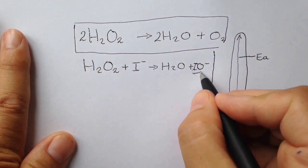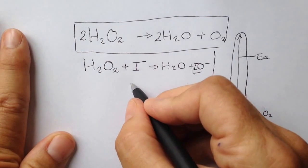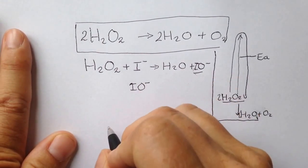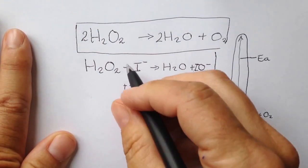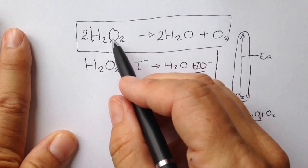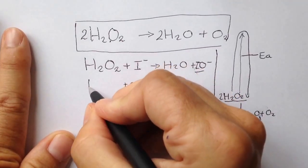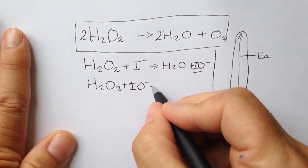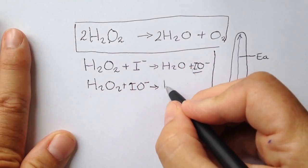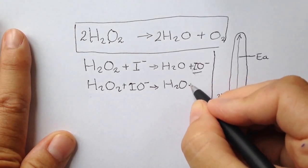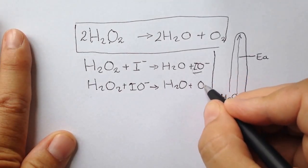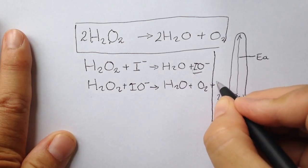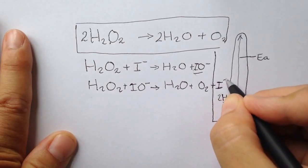So this has to get used up in the next step, our intermediate which was IO minus. And guess what, we've still not used up two molecules of peroxide. So another molecule of hydrogen peroxide now must react with the intermediate to make more water and oxygen gas, and the iodide ion is regenerated.